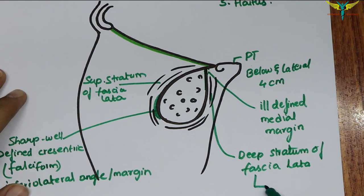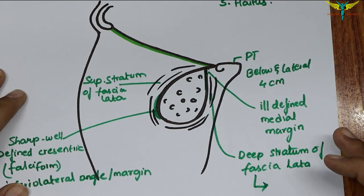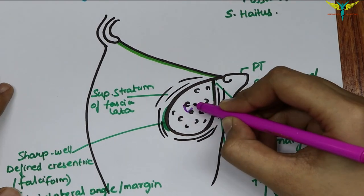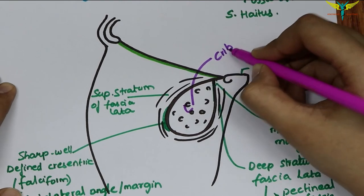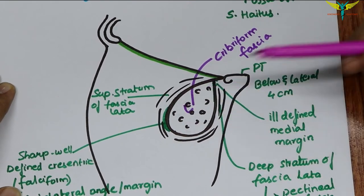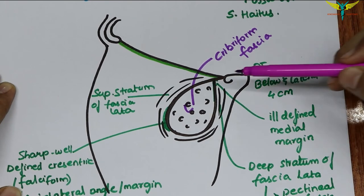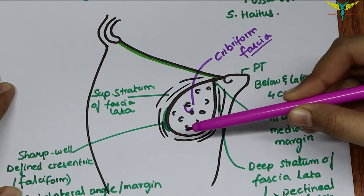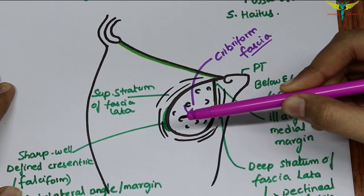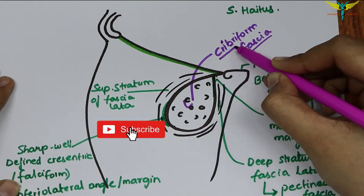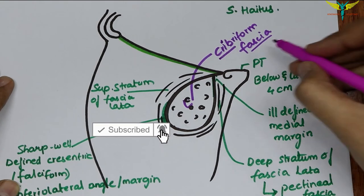The deep stratum merges with the fascia overlying the pectineus muscle, called the pectineal fascia. The saphenous opening is closed by a membrane of areolar tissue called the cribriform fascia. This cribriform fascia is pierced by a number of structures, making it sieve-like — hence the name 'cribriform,' meaning sieve-like.